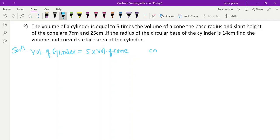Slant height is 25cm. Cylinder radius is given as 14cm. Find the volume and CSA of cylinder. Volume of cylinder formula is πr²h. We know π, we know r, but we don't know h for the cylinder, so we need to find h.